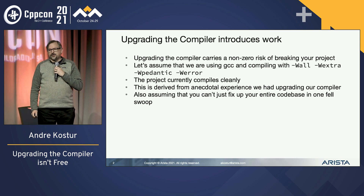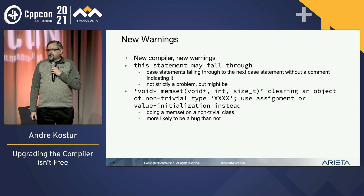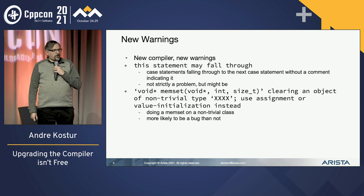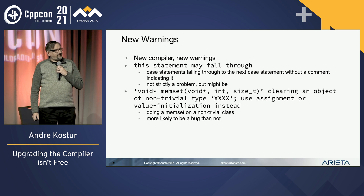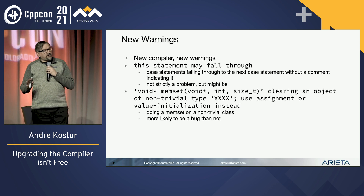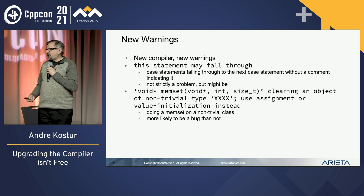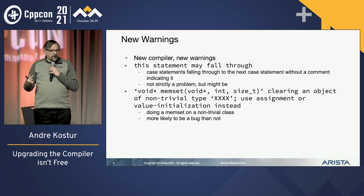Upgrading your compiler, you're going to run into problems such as new warnings. Some of them are problems, some of them aren't. For example, noting when you have fall-throughs — that may or may not be a bug, but it'll take you time to look at your code and find out: did you mean that to be a fall-through, or is there a break missing? In our case, we found both.